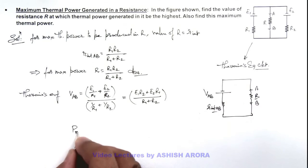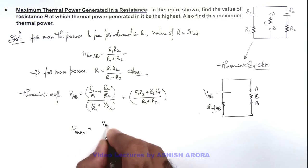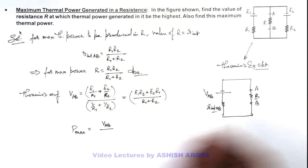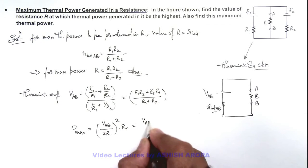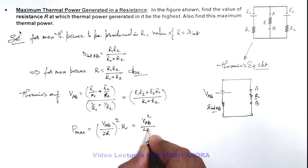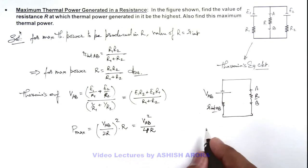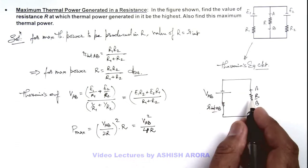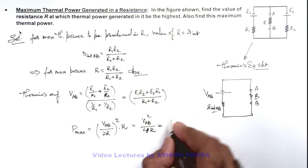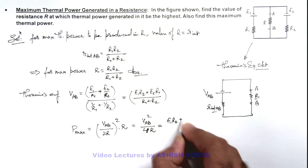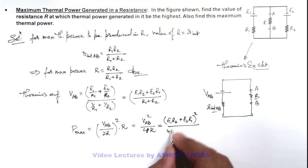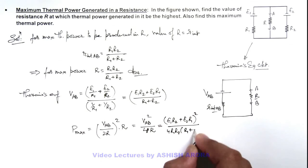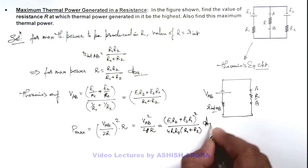The maximum power equals V_ab divided by the total resistance in this circuit, which is 2R, the whole squared, multiplied by R. Simplifying, this gives V_ab² / 4R — that is the maximum thermal power produced in this resistance. On substituting the value of R, the result we get is (E1*R2 + E2*R1)² divided by 4 * R1*R2 * (R1 + R2). That is the final result of this problem.